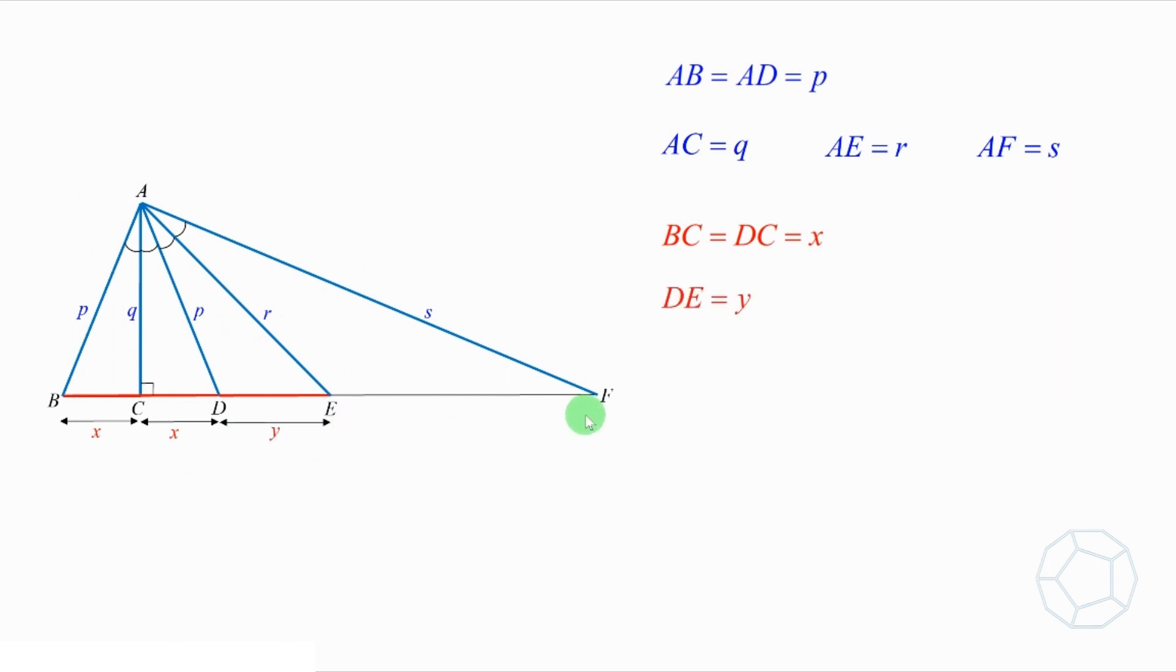How about the length of EF? Because AE is a median of large triangle, therefore, EF is equal to BE, which is the sum of the three parts. Therefore, it's equal to 2X plus Y.